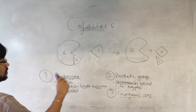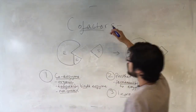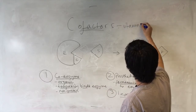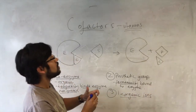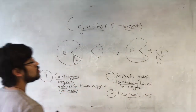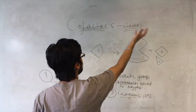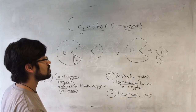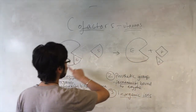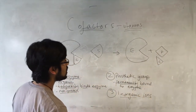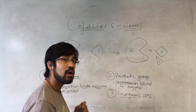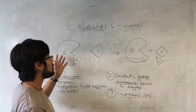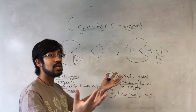One side note: these cofactors, depending on their nature, are often what we know as vitamins — a dietary component. Things described as vitamins are usually needed in small quantities because they act as cofactors for enzymes. Because they don't get used up in the reaction, they are reproduced and only needed in small quantities — just like enzymes, where one enzyme can carry out many, many reactions.